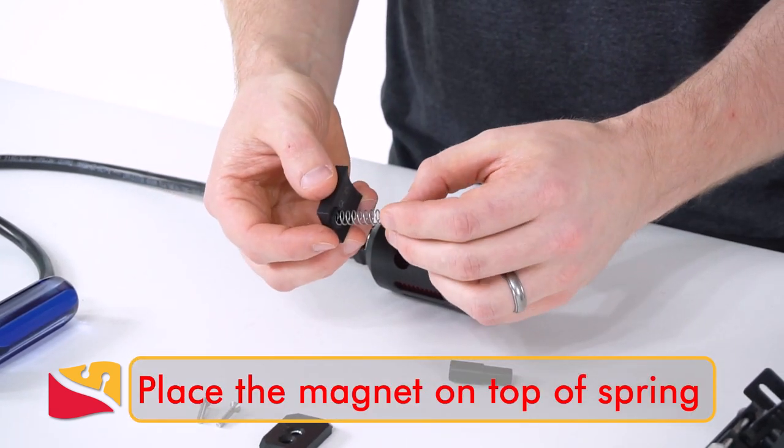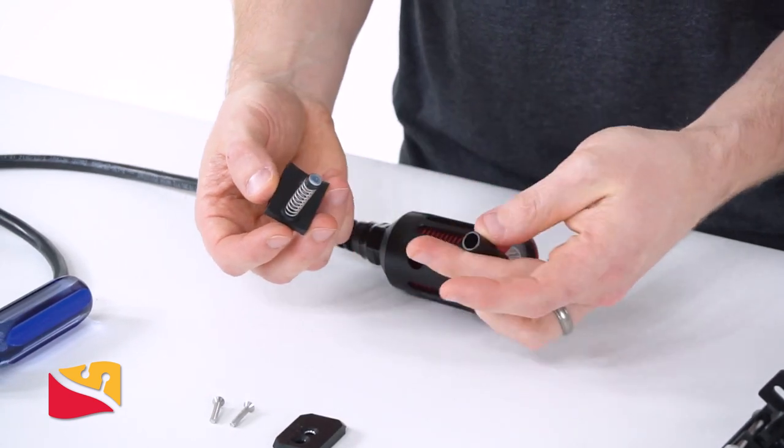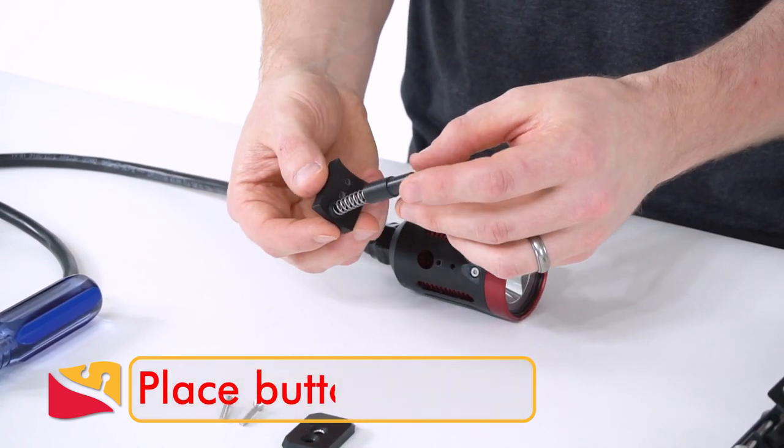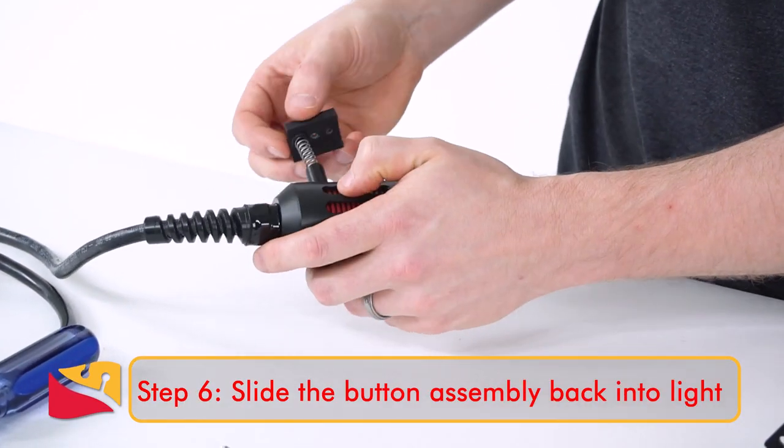Place the magnets on top of the spring. Then you can place the button on top. Now the entire assembly can be slid back into the light.